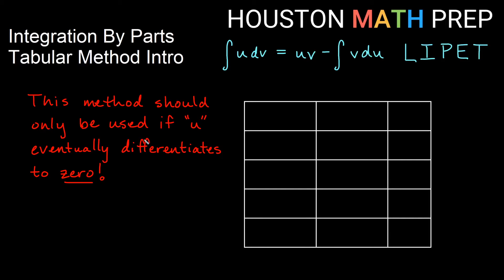One big beware we want to send out to everybody: you really only want to use the tabular method for integration by parts if what you're choosing for u eventually has a derivative of zero. And generally that's going to mean that you're choosing u to be some polynomial.